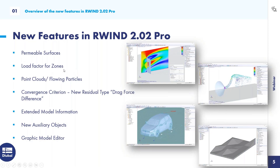We also added load factors for zones, so you can modify loads directly in RWIND. When using them in RFEM, they will be increased or reduced by these load factors you've entered into the model. This saves a lot of time — you don't have to create your own loads in RFEM but can already have reduced or extended loads in RFEM6.